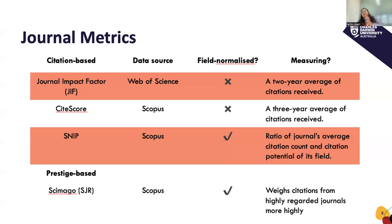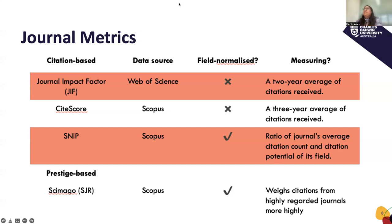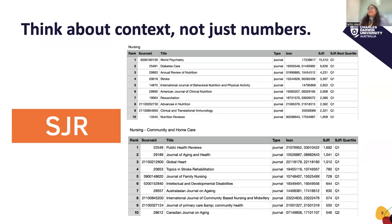What field normalization means is that different fields of research have different citation habits. For example, in STEM subjects, particularly health and science, traditional citation practices differ from the arts where there might be different citation practices. More of the journal metrics will also be explained in our metrics session coming up. The key takeaway is that there are a variety of metrics and you should use more than one because it will tell a story. It's actually about context, not the scores alone, that are important.